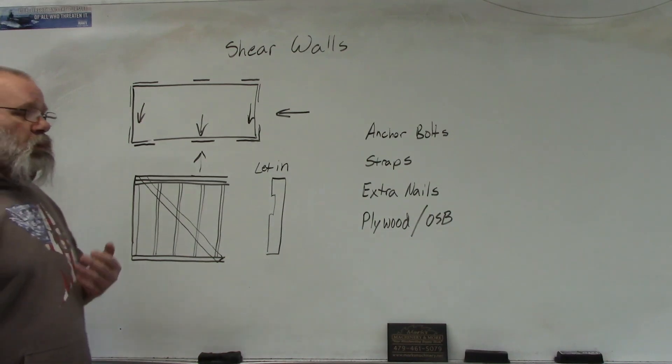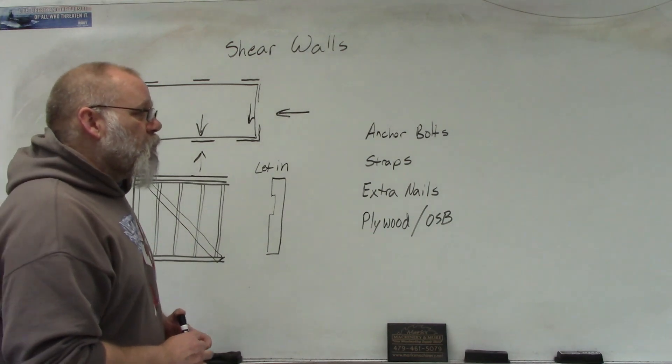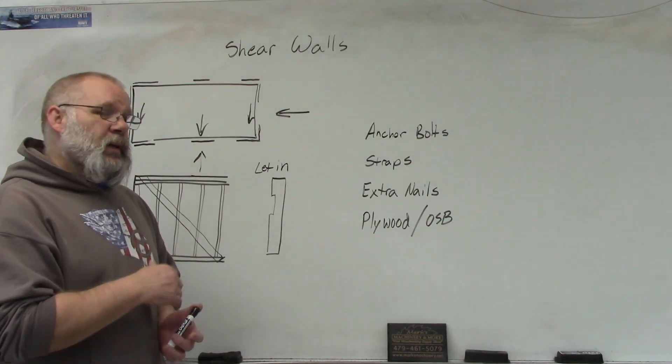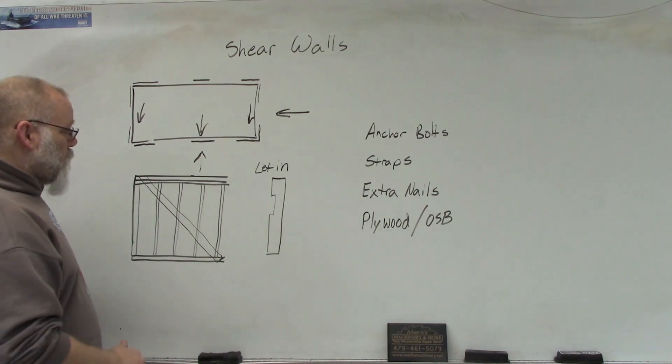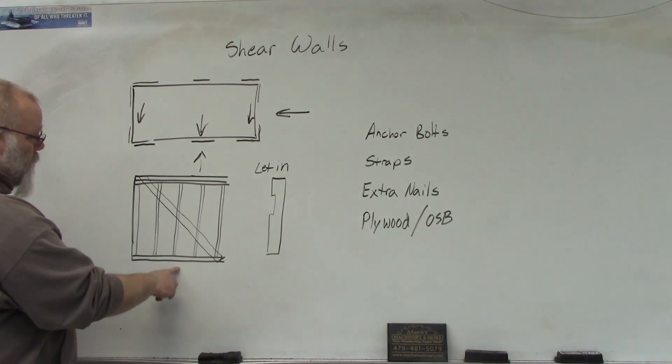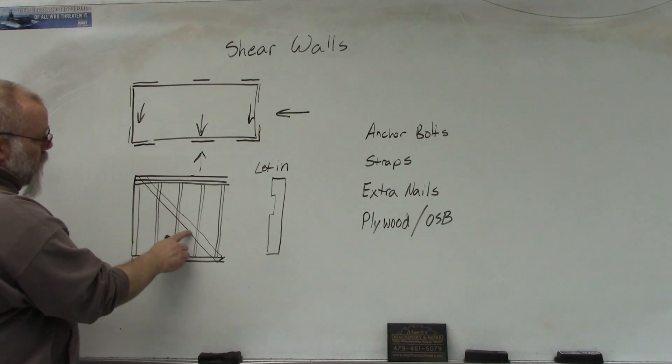So a little bit of history about a shear wall. Back in the pre-1980 time frame, a shear wall was built like this. You have your two top plates, a bottom plate, and then you would take a 1x4 and you would let it in.